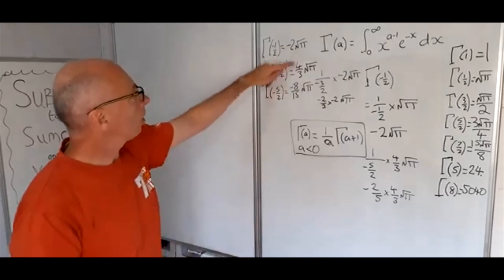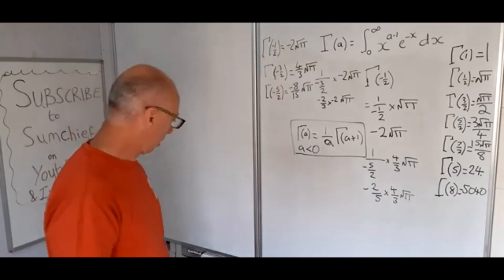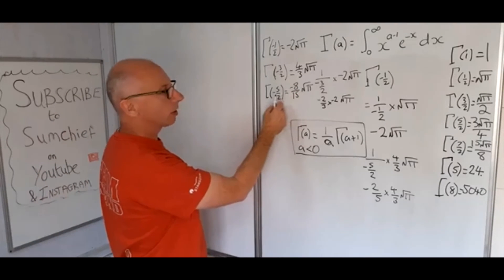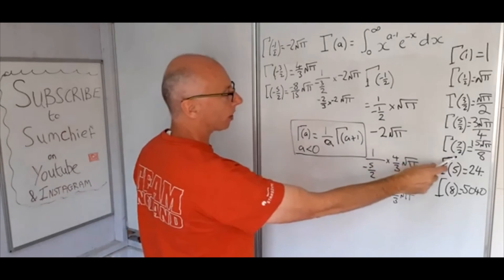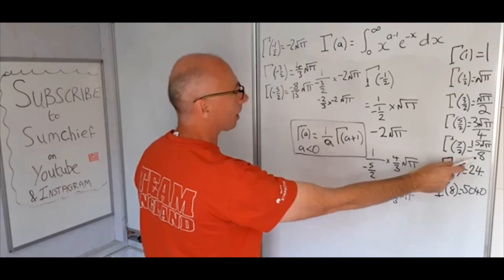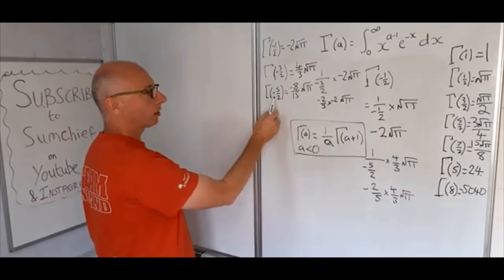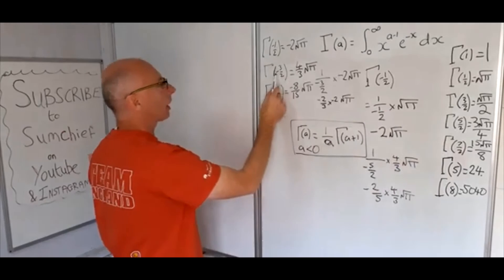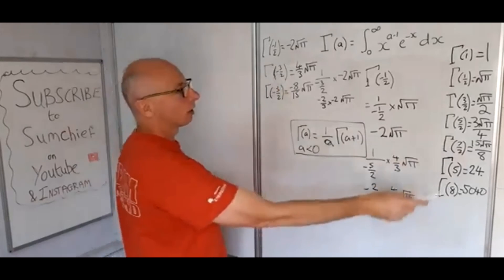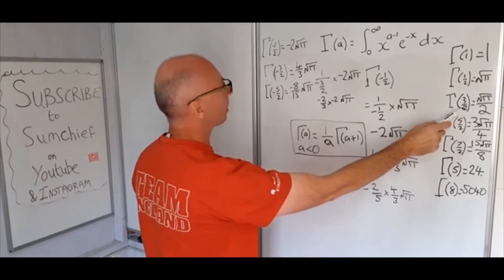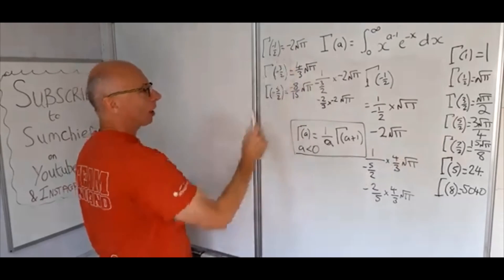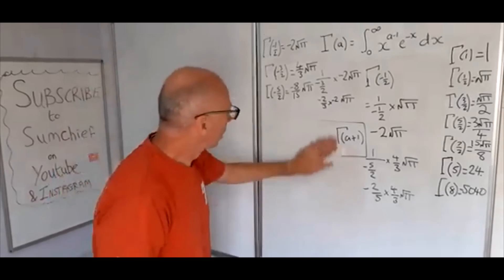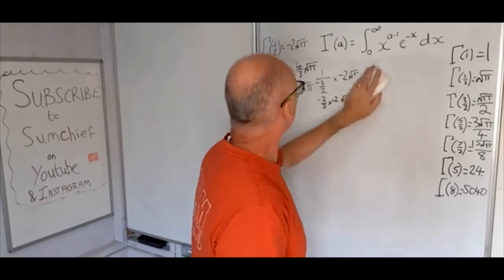You can see the values alternate between positive and negative. The magnitudes mirror the positive half-integer values but shifted by one step. For instance, gamma of 7 over 2 corresponds as a negative version to gamma of minus 5 over 2, and gamma of 5 over 2 mirrors gamma of minus 3 over 2. That's why there's a reciprocal in the formula for negative arguments.